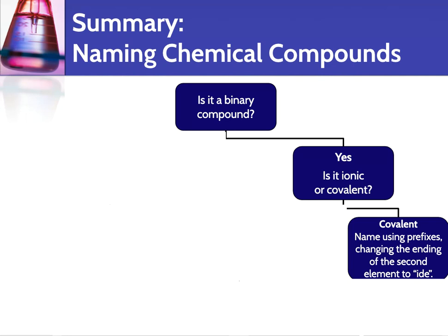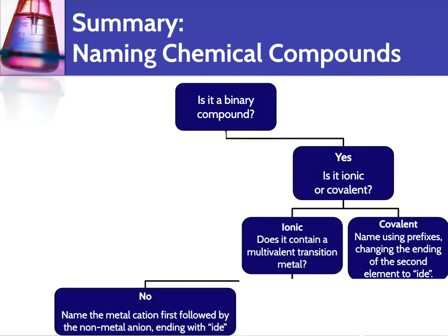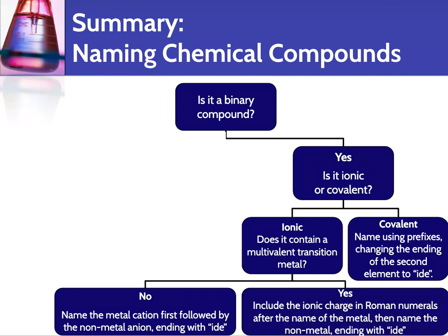If it's ionic, you still have to ask another question: does it contain a multivalent transition metal — things like lead, iron, and tin that have more than one ionic charge? If it doesn't, you just name the metal cation first, then the non-metal anion, ending with -ide. If it does contain a transition metal, you include the ionic charge in Roman numerals after the name of the metal, then add the non-metal ending with -ide.